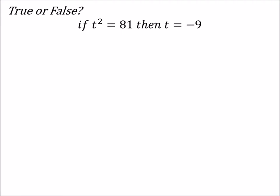In this one, we're going to find to be false because of, once again, the order. If t squared equals 81, then t equals negative 9.